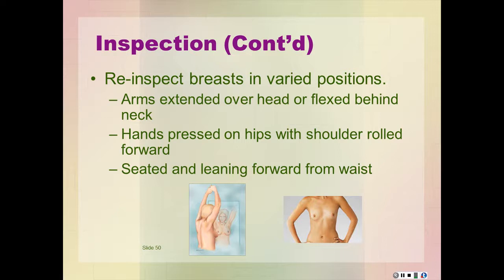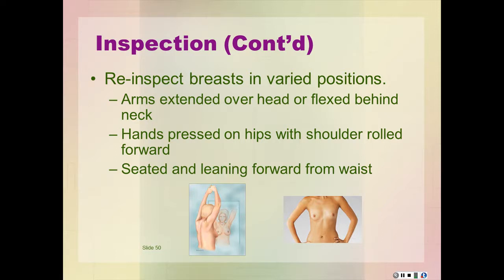Re-inspect each breast with the patient in varied positions, including arms extended overhead or flexed behind the neck, hands pressed on hips with shoulders rolled forward, and seated leaning forward from the waist. For all patient positions, the breast should appear bilaterally symmetric with an even contour and absence of dimpling or retraction. You'll be surprised to notice when you try all these positions for a patient with a mass or lump how strikingly obvious it will be in one position and not at all visible in another.